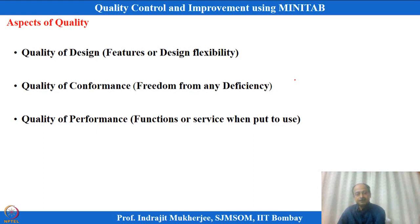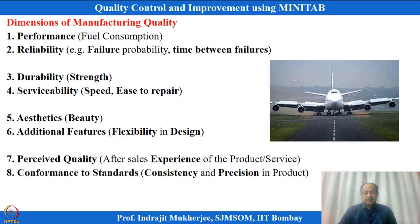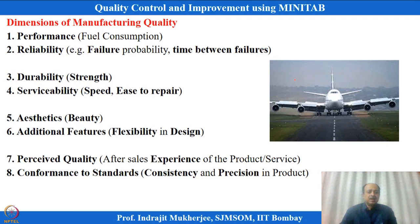In manufacturing quality, Garvin has given eight dimensions. One is performance — for example, a car's fuel consumption and road performance. These are abstract but clearly defined dimensions. Reliability means failure rate, failure probability, or time between failures. Durability or strength of the product — how many years it will last, its ability to withstand use. Serviceability refers to ease and speed of repair.